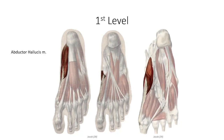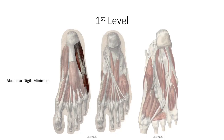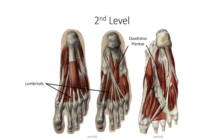Next is abductor hallucis, found in the medial compartment, originating off the medial part of the tuberosity and inserting along the medial surface of the base of the proximal phalanx of the first digit. As the name implies, it abducts and flexes the first digit. A third muscle is abductor digiti minimi, in the lateral compartment, originating off the lateral portion of the calcaneal tuberosity and inserting along the lateral surface of the base of the proximal phalanx of the fifth digit — an abductor and flexor of the fifth digit.